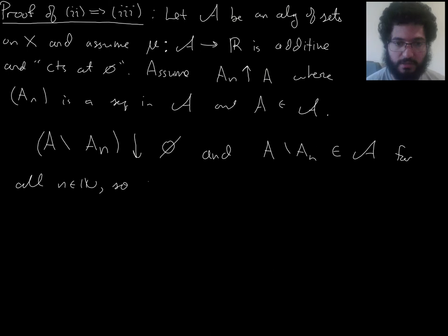So, by our assumption, which is 2, μ of these, as a sequence of real numbers, converge to 0.